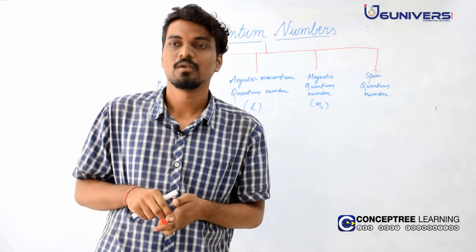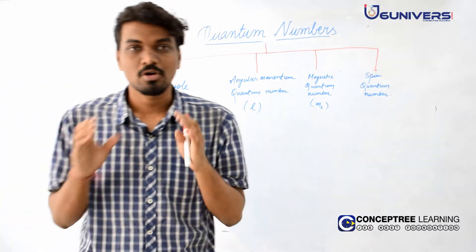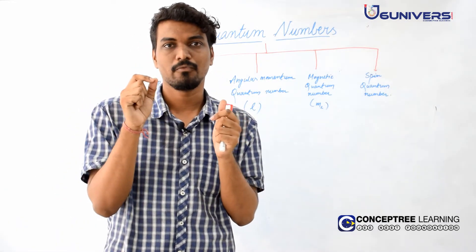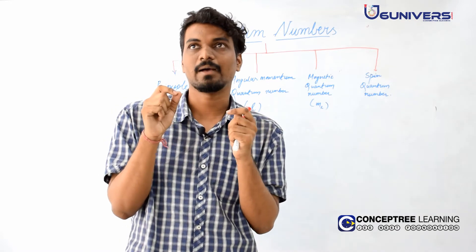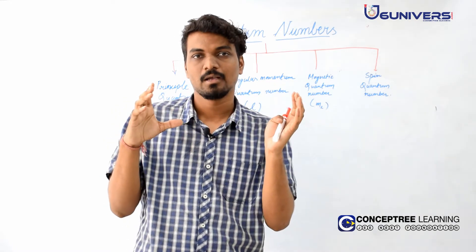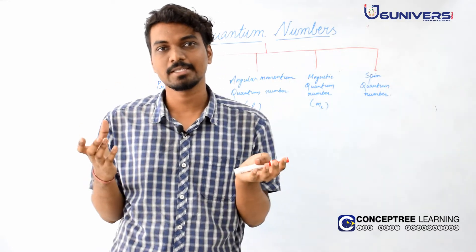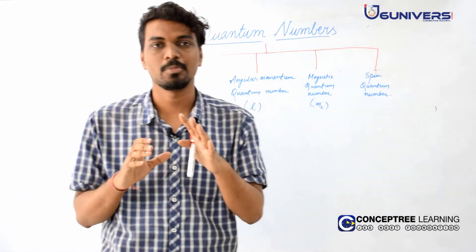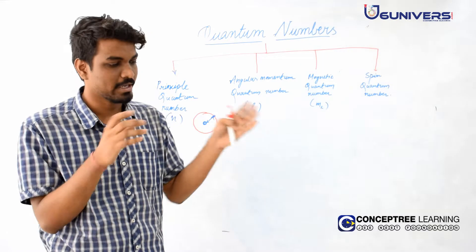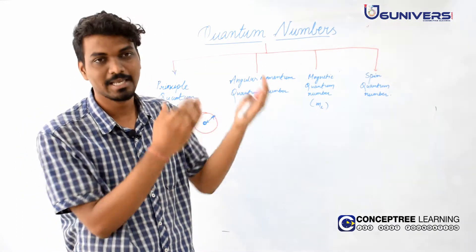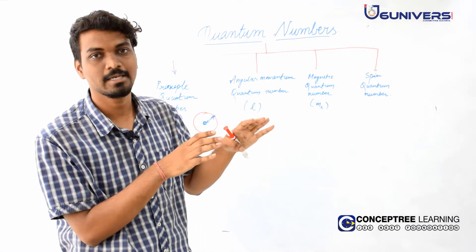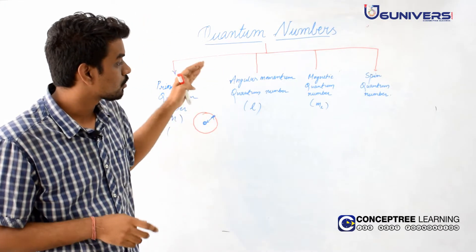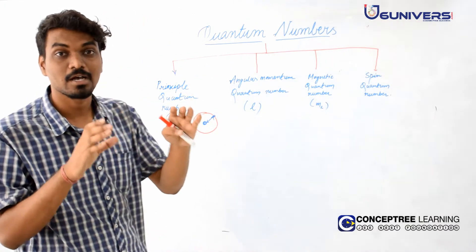Now what's an orbital? Electrons in an atom don't have a fixed position. Orbitals are nothing but just a region in space in which there is a maximum probability to find an electron. If this is an orbital, it is just like a space, and there is a maximum probability to find an electron in that space. So angular momentum quantum number gives us the shape of an orbital — the shape of that space. It is represented by l.